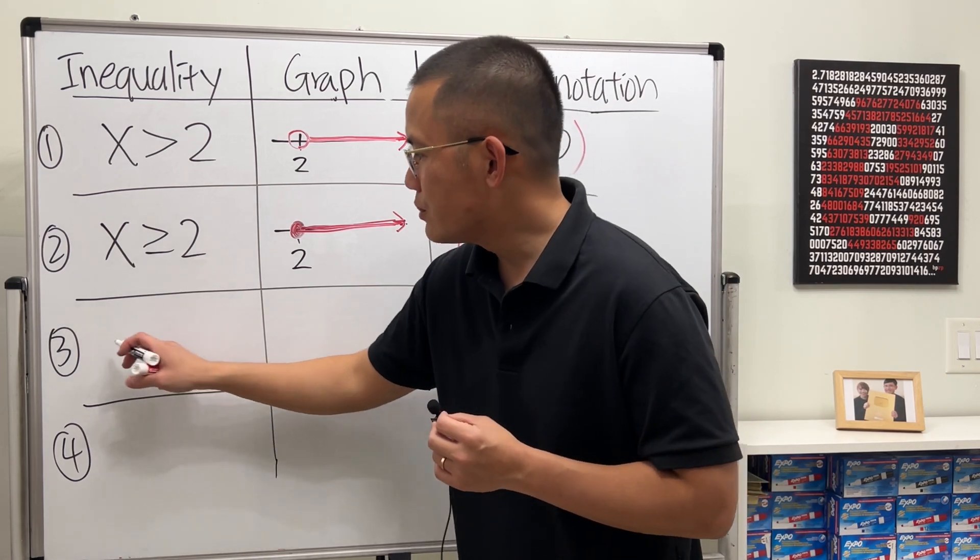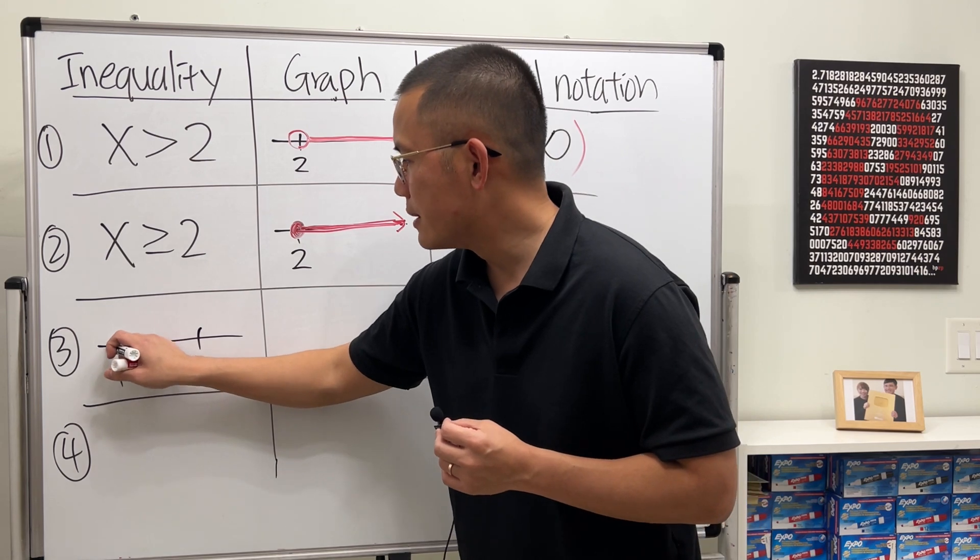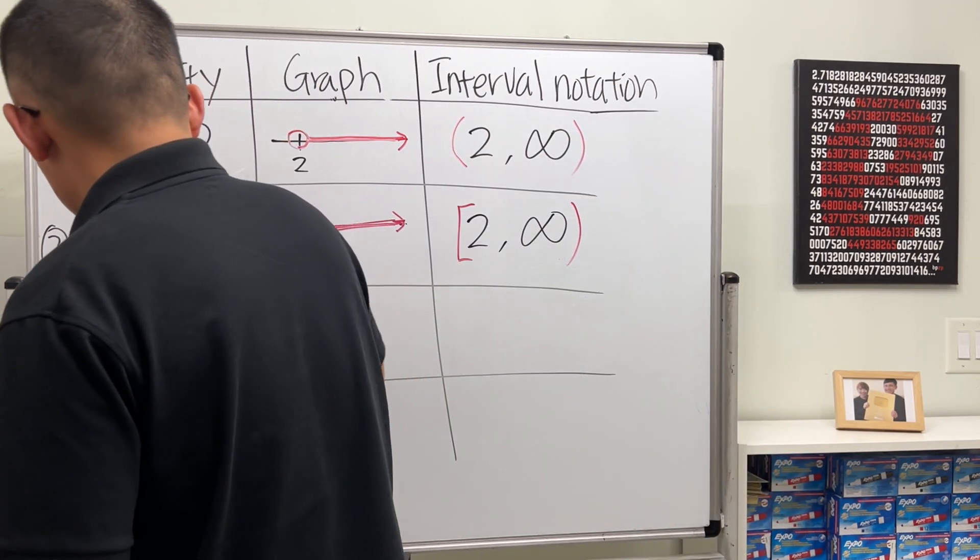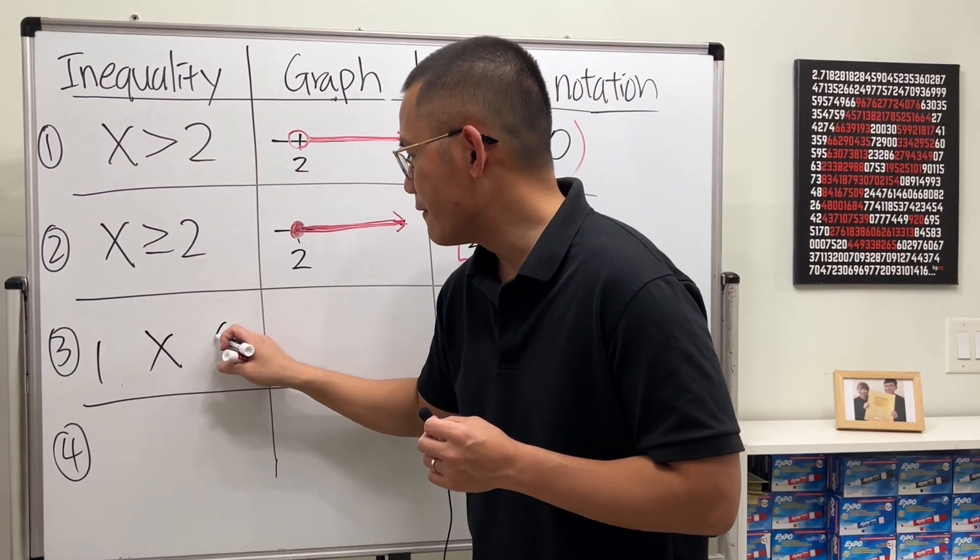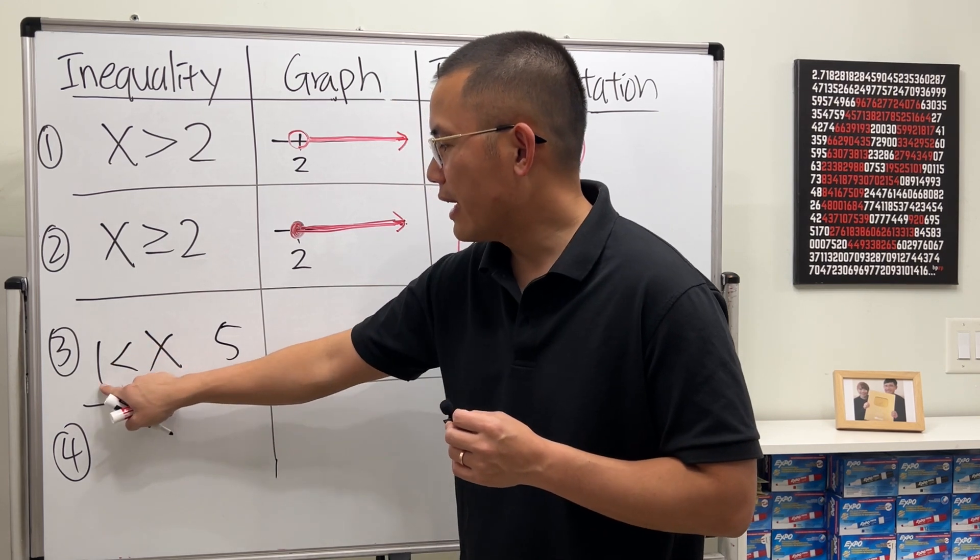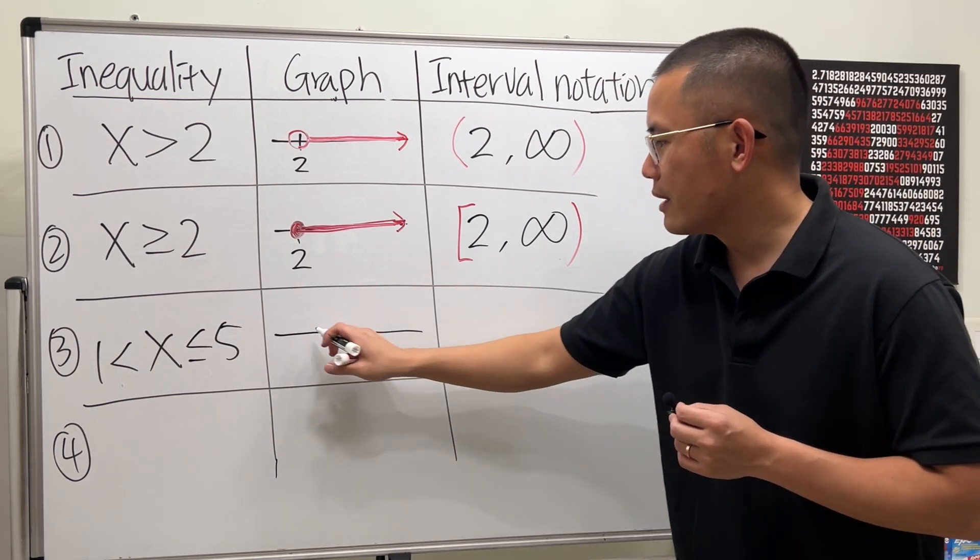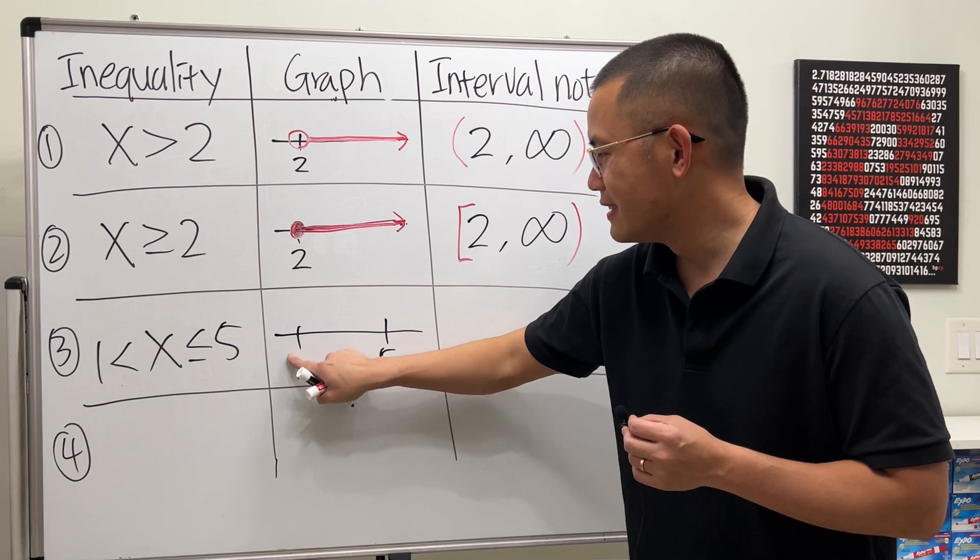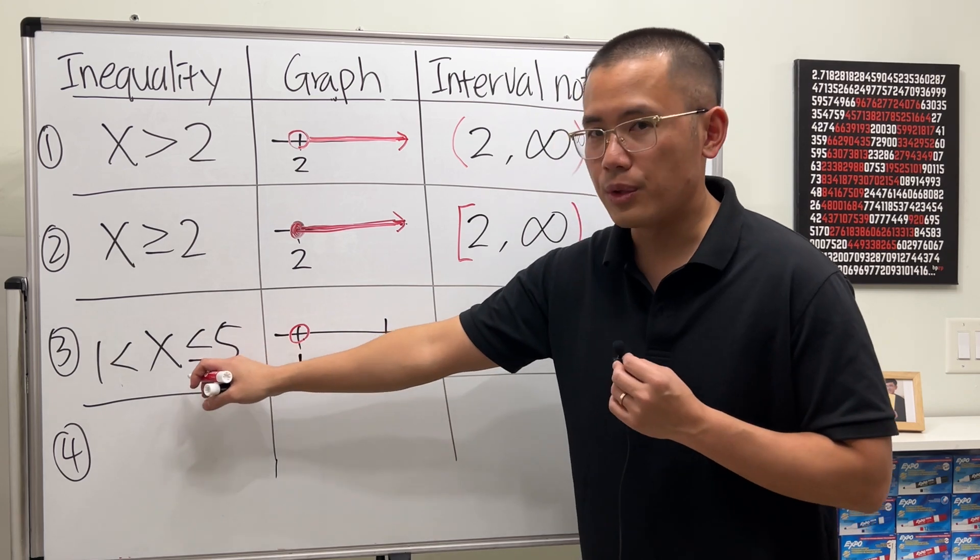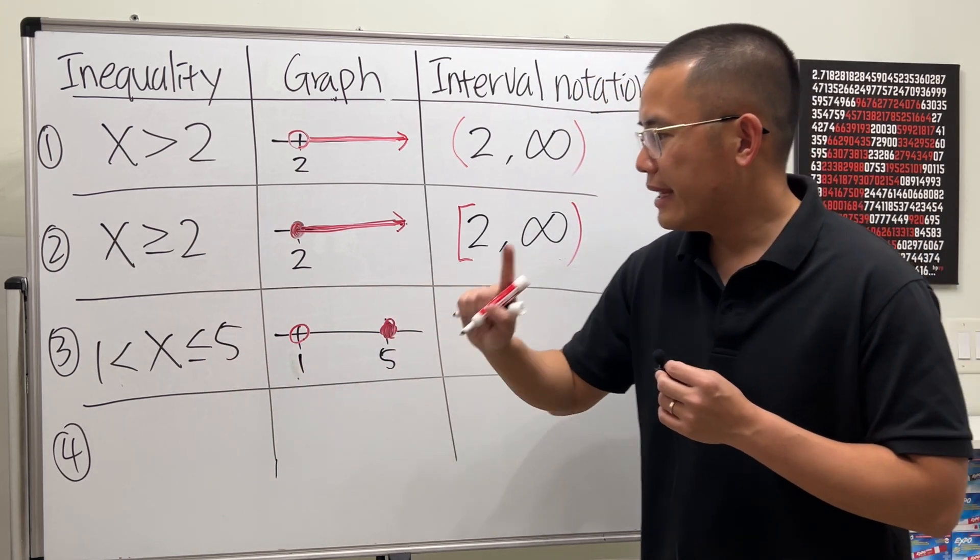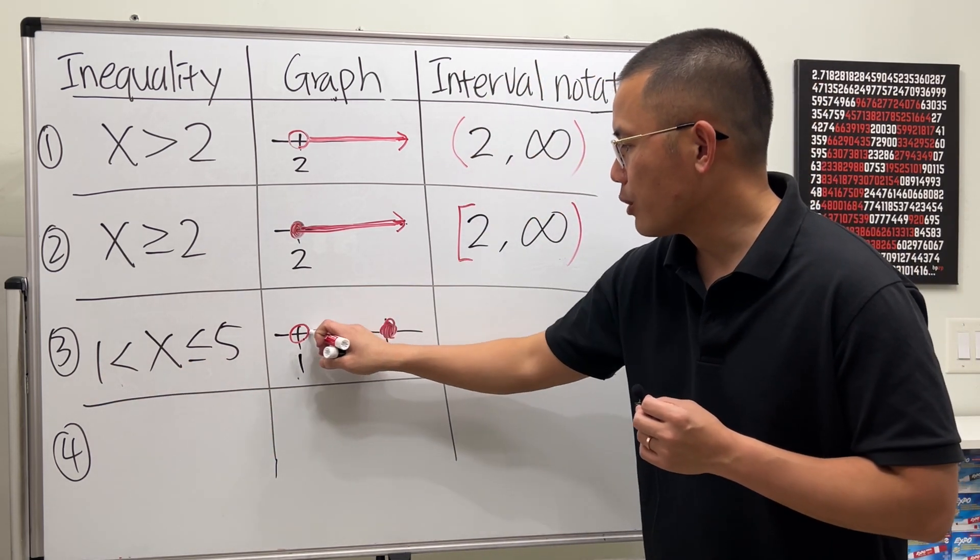Now, for number 3, let's say we have x is in between 1 and 5. And let's say we have this right here, not including the 1, but here we are including the 5. So in this case, we have a number line. Let's go ahead and mark the 1, and let's say here is the 5. And then here, the 1 is not included, so open circle. But the 5 is included, so closed circle. And notice x is in between 1 and 5. So here, you are going to shade the middle portion. So it's right here.